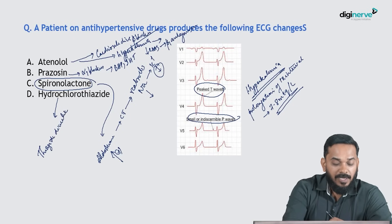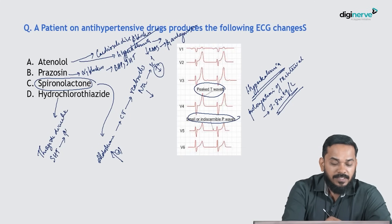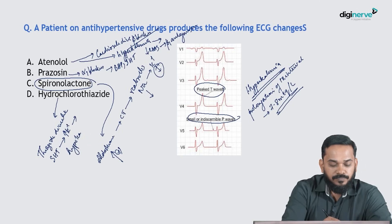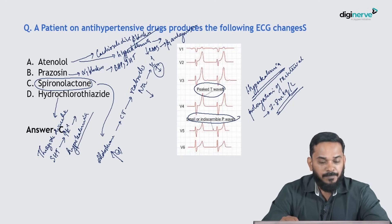Hydrochlorothiazide is primarily used in the treatment of systemic hypertension. Thiazide diuretics produce increased excretion of potassium, leading to hypokalemia — so they do not produce hyperkalemia. Therefore, the answer is spironolactone, option C.